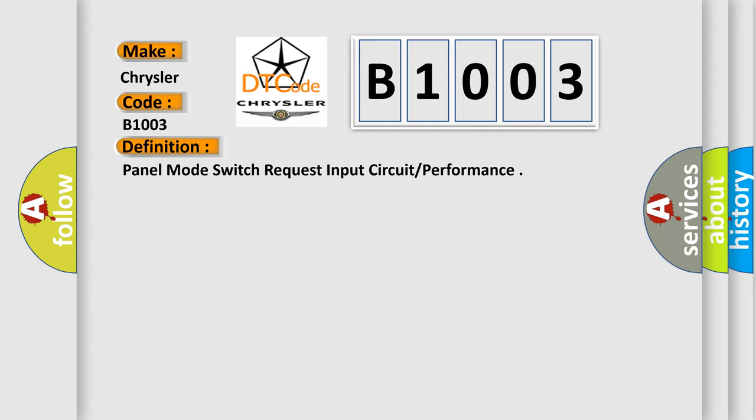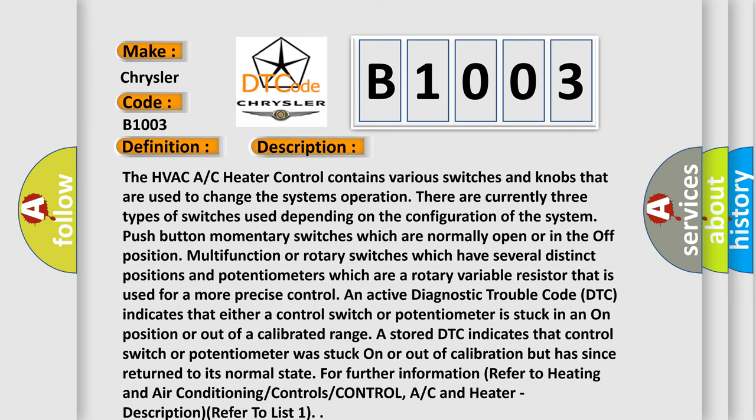Here is a short description of this DTC code. The HVAC heater control contains various switches and knobs used to change the system's operation. There are currently three types of switches: push button momentary switches which are normally open or off; multi-function or rotary switches which have several distinct positions; and potentiometers, which are rotary variable resistors used for more precise control. An active DTC indicates that either a control switch or potentiometer is stuck in an on position or out of calibrated range. A stored DTC indicates that the control switch or potentiometer was stuck on or out of calibration but has since returned to its normal state. For further information, refer to heating and air conditioning controls.